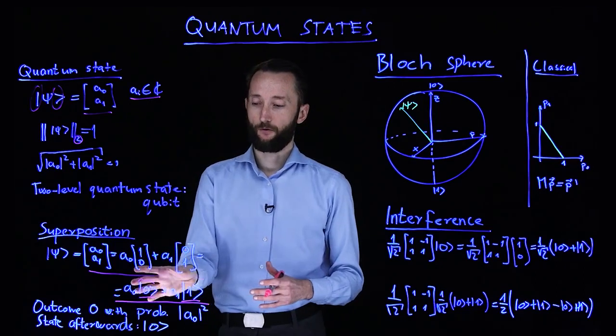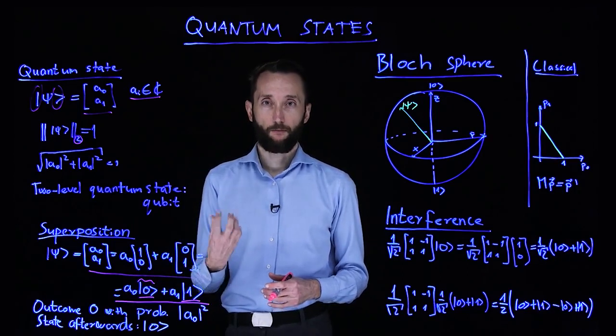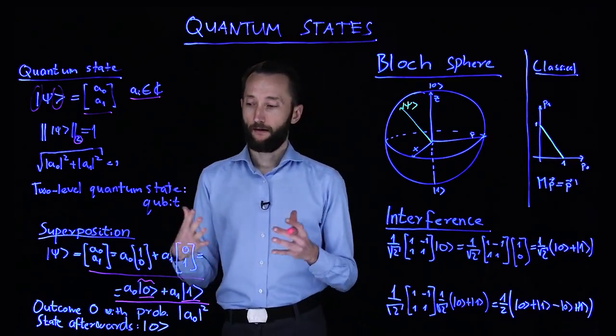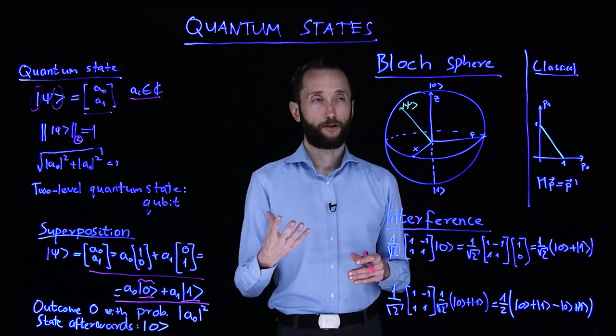Basically once you pull out a sample of the distribution and you get an outcome, you make that observation, then you get a deterministic state afterwards, after the random outcome.